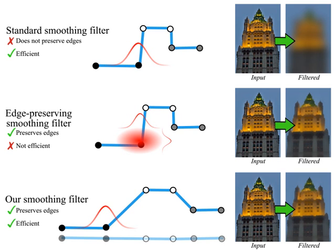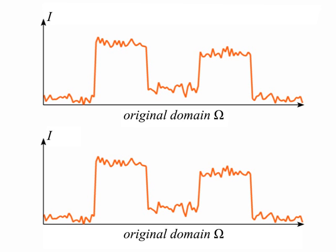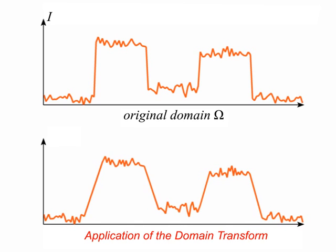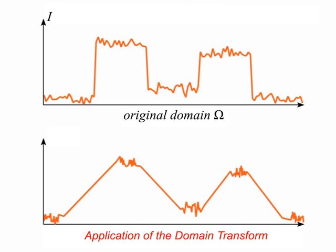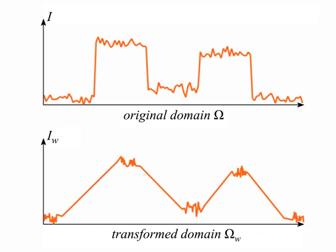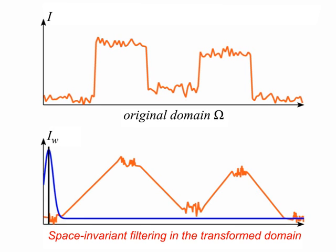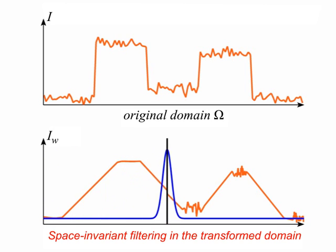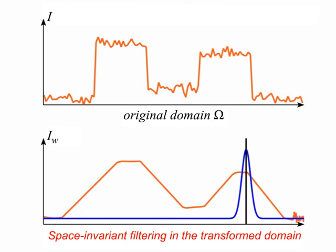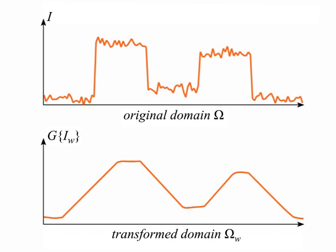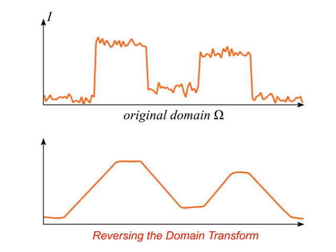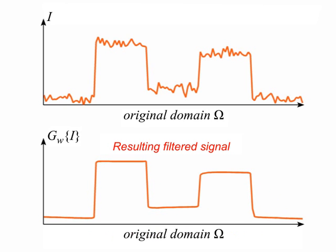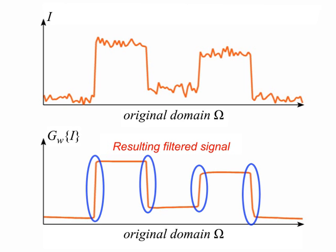We demonstrate our approach with a simple example. Given a one-dimensional input signal, we apply a domain transformation derived from the high-dimensional space. We then apply a space-invariant filter to the transformed signal. Finally, we reverse the domain transformation to obtain the resulting filtered signal. Notice how filtering in the transformed domain preserved the well-defined edges.